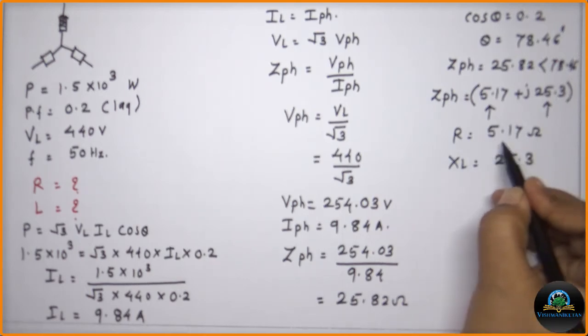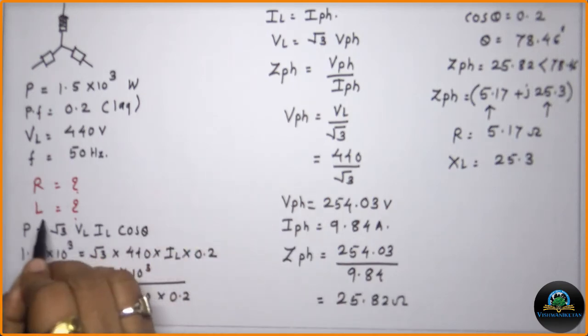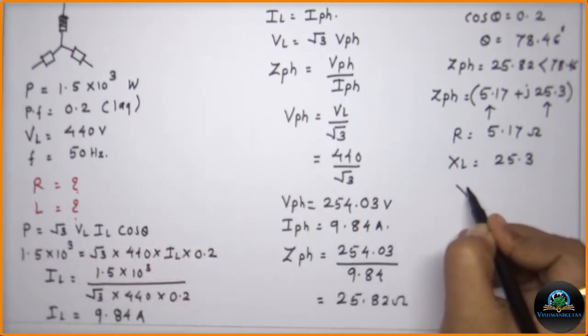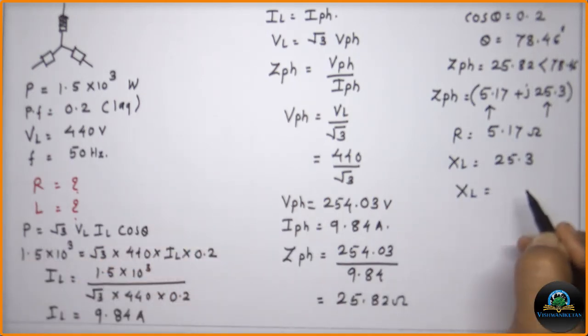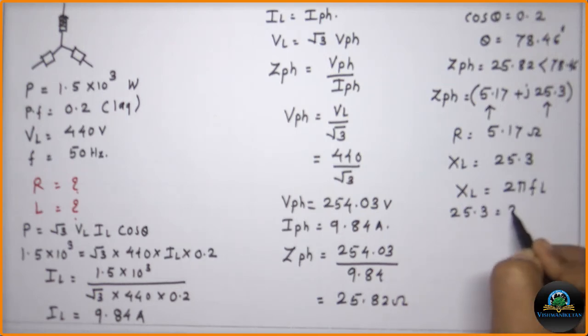We already put the value of R in this part, but they are asking the value of L. So writing the equation, XL is equal to 2 pi f L.